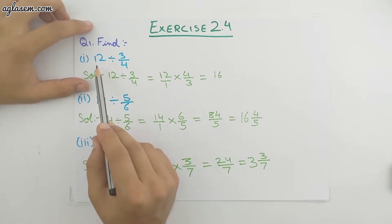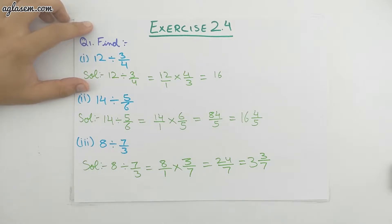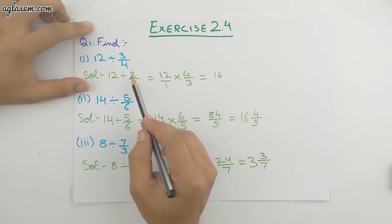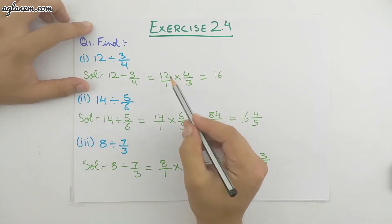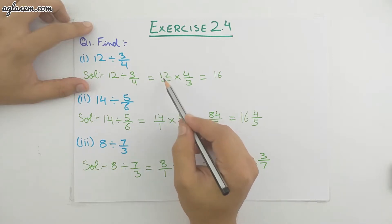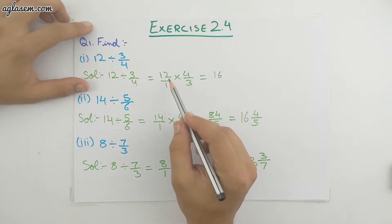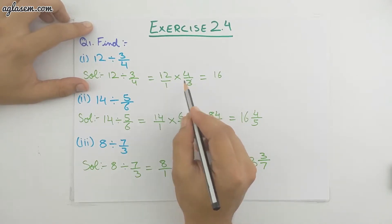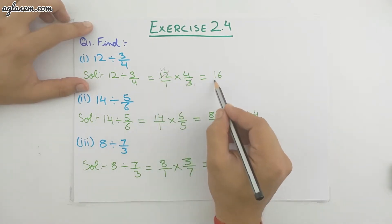The first part is 12 divided by 3/4. When we divide a fraction, the divide sign changes into multiplication and the number which is dividing changes its place — the bottom number comes to the top and the top number goes to the bottom. So 12 divided by 3/4 becomes 12/1 multiplied by 4/3. Multiplying gives us 16, because 3 is common in 12 and 3, so 4 times 4 is 16. The answer is 16.